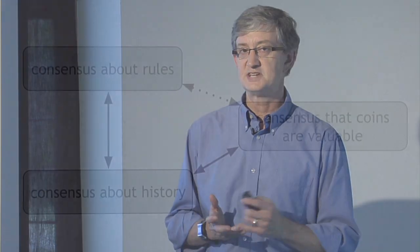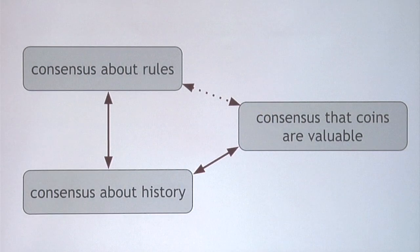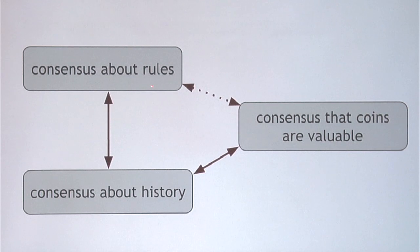What's important about all three forms of consensus is the way they're intertwined with each other. The consensus about the rules and the consensus about history go together, because it's the rules that determine which transactions can go into a block and which kinds of blocks can come into existence. If you agree on the rules — that is, which blocks are valid — then it's possible to build a consensus about the blockchain and about history. Without a consensus about the rules, people will disagree about what's in the history.